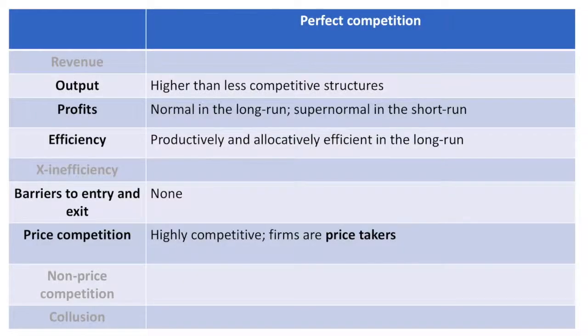In perfect competition, we'll focus on the measurements listed in dark text. Output is going to be higher than under less competitive structures such as monopoly. Profits can be supernormal in the short run but will return to normal levels in the long run. This is largely due to the fact that there are no barriers to entry and exit — if supernormal profits are being earned in the short run, new firms can easily enter the market. The high level of competition results in productive and allocative efficiency for firms in the long run, as price equals marginal cost and firms produce at their lowest average total cost. Price competition is high as price is dictated by the market; therefore firms are price takers and have no price setting power.